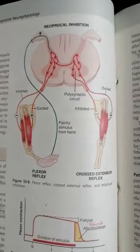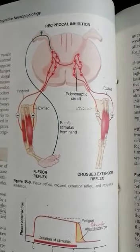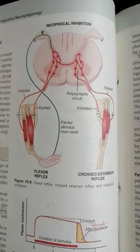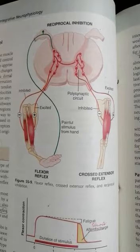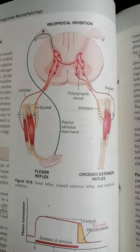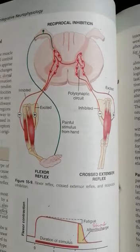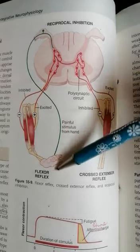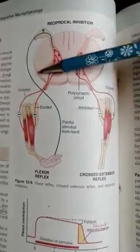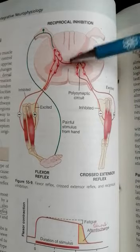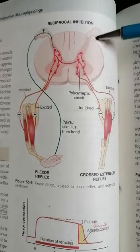Hey everyone, welcome to my channel Lanavate. Today we will discuss the spinal cord reflexes. The major stretch reflexes of the spinal cord that we will discuss in this video are the flexor reflex or the withdrawal reflex, and the second one is the cross extensor reflex. By the diagram you can see that there is a flexor reflex going on one side while the cross extensor reflex is going on the other side of the same spinal cord segment.